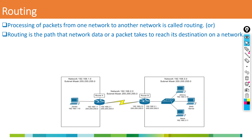There are two things that happen in routing. First, it has to select the path. From Bangalore to Chennai, you may have multiple paths — not a single path. When you have multiple paths, it decides which is the best path to reach the destination. After selecting the best path, whatever information you have, it carries that information over the best path — that is routing.